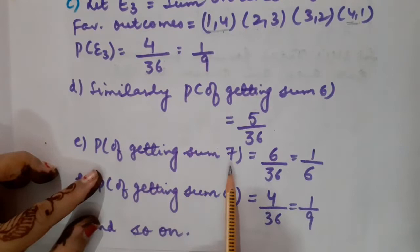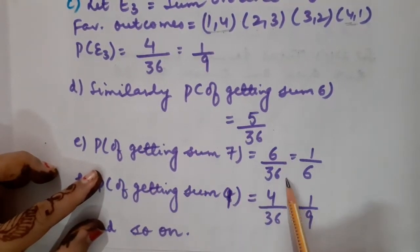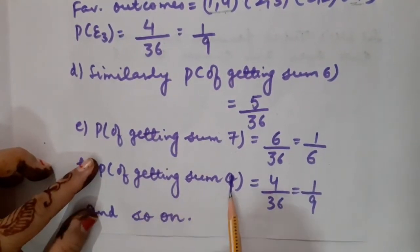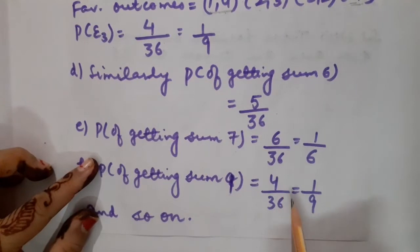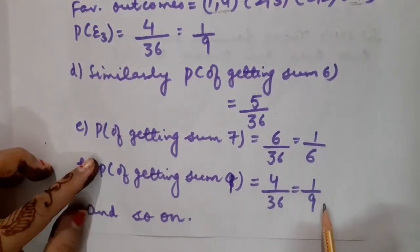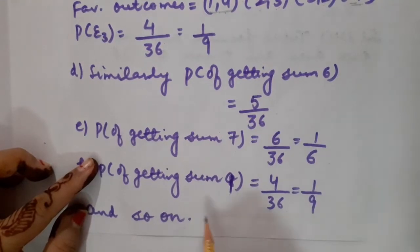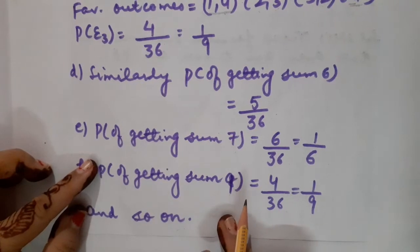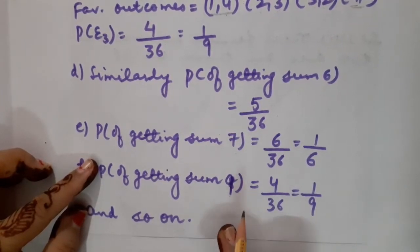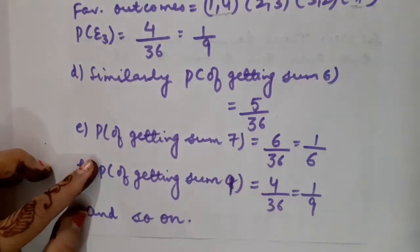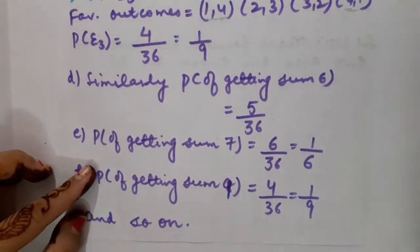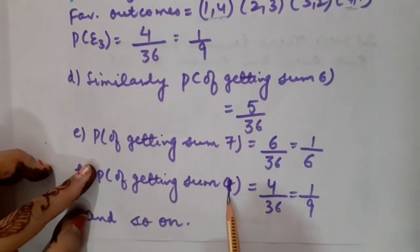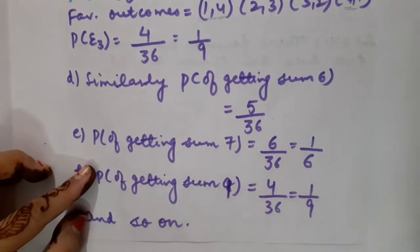The probability of getting the sum as 7 is 6/36, which equals 1/6. The probability of getting the sum as 9 is 4/36, equal to 1/9. The two remaining parts — sum as 10 and sum as 11 — are left as homework, since for sum 12 the probability is already given in the table.